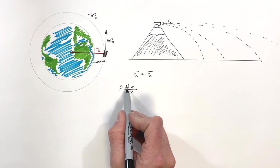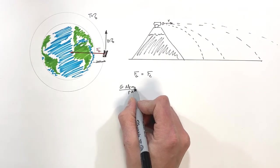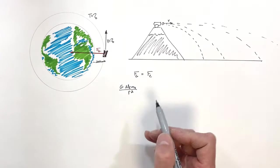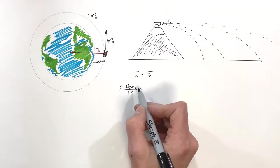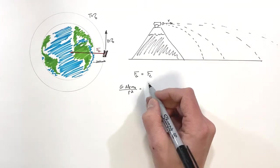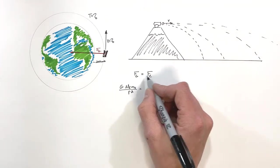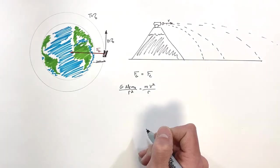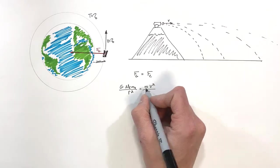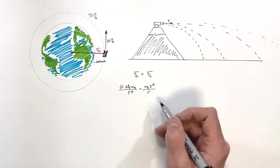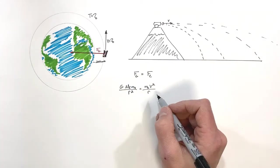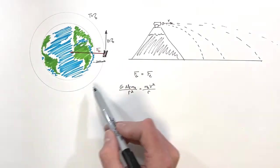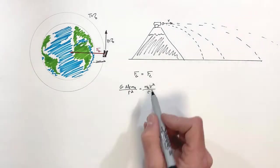In Newton's law of universal gravitation, G is the gravitational constant, the big M is the mass of the Earth, and the small m is the mass of the satellite. The radius is the distance between the center of the Earth and the satellite. Setting gravity equal to the centripetal force — which is mv²/r — we note that the m here is the mass of the satellite, since it's the satellite moving in a circle, and r is the orbital radius.